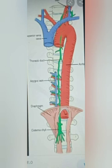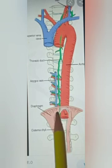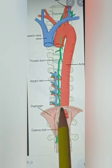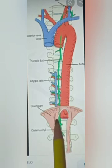The intestinal trunk brings lymph from the stomach, intestine, pancreas, spleen, and the antero-inferior part of the liver. The cisterna chyli passes through the aortic opening of the diaphragm and ascends, continuing as the thoracic duct, which begins from the superior aspect of the cisterna chyli.